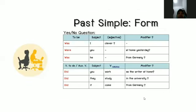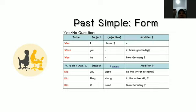Simple past interrogative forms using 'to be' (was/were): 'Was I at home yesterday?' 'Were you at home yesterday?' 'Was he from Germany?' Using verb 'did': 'Did you work as the writer at home?' 'Did they study in the university?' 'Did it come from Germany?'